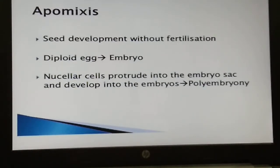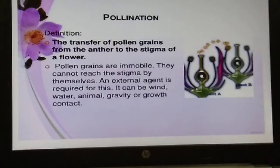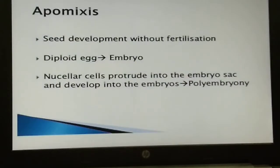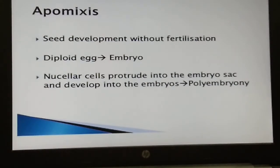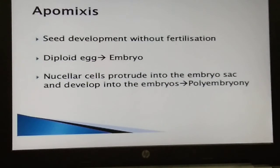In such species, each ovule contains more than one embryo — this is termed polyembryony. This concludes the chapter on sexual reproduction in flowering plants. Topics covered include the structure of the flower, pre-fertilization structures, microsporogenesis, megasporogenesis, pollination and its types, artificial hybridization, double fertilization, post-fertilization events including endosperm and embryo development, seed and fruit formation, apomixis, and polyembryony.